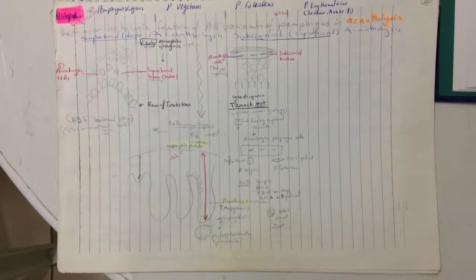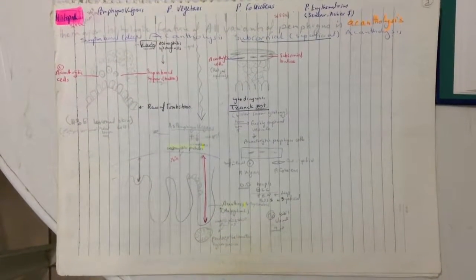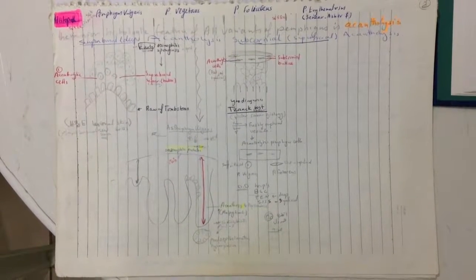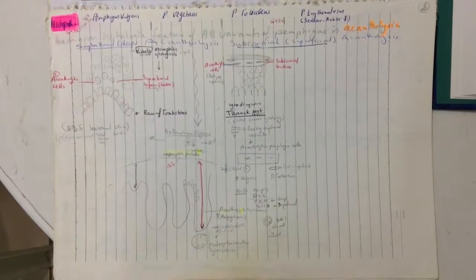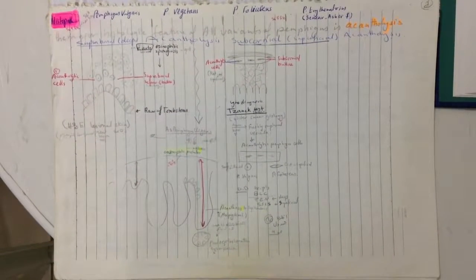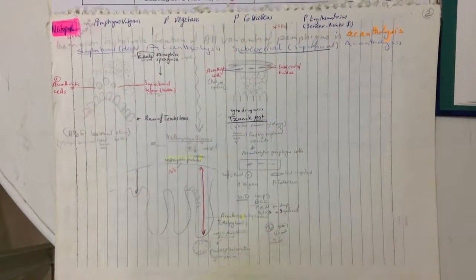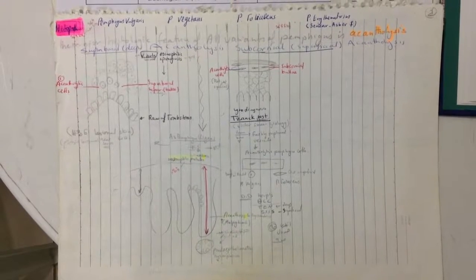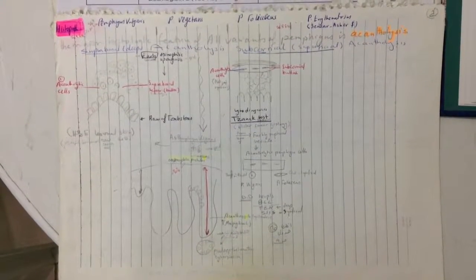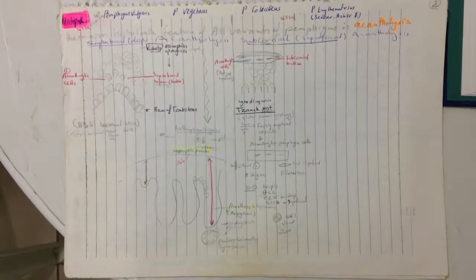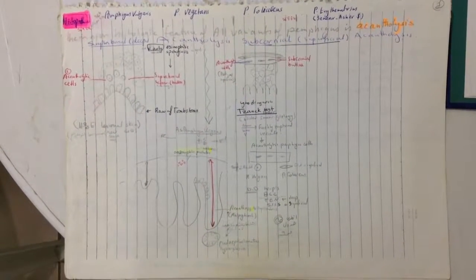In pemphigus foliaceous and erythematosus, there is subcorneal or superficial acantholysis with subcorneal bulla and acantholytic cells. A Tzanck test or blister smear cytology from a freshly ruptured vesicle can show acantholytic pemphigus cells. If the cells are rounded, the acantholysis is deep — pemphigus vulgaris. If flat, acantholysis is superficial — pemphigus foliaceous.